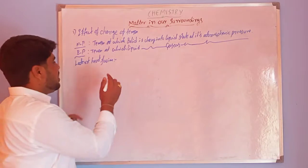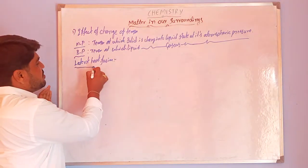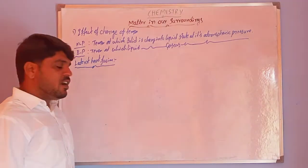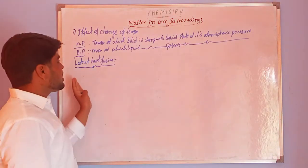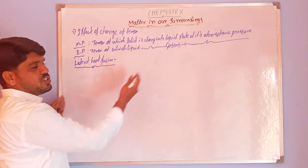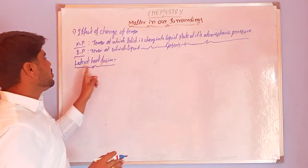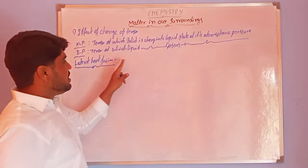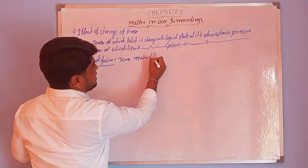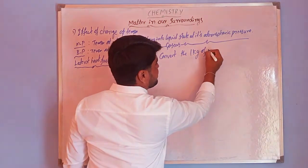Latent means hidden energy. At the time ice changes into liquid, the temperature remains the same — the ice absorbs the heat energy but temperature remains constant. After the complete conversion of ice into liquid, latent heat of fusion is the heat energy required to convert the solid into liquid at constant temperature.